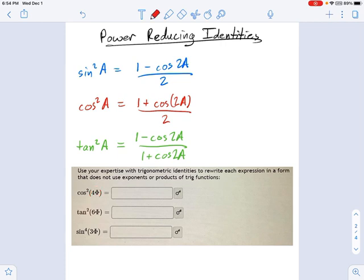And what's this going to look like? Let me work some algebra over here on the right. This is going to be 1 plus cosine of 2 times 4 phi. That's our angle, 4 phi, all divided by 2.